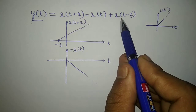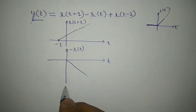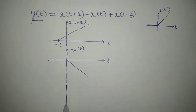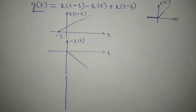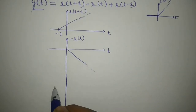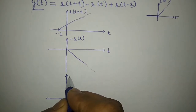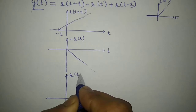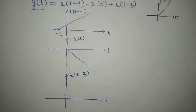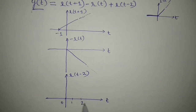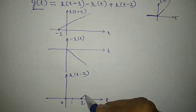Now I need to sketch r(t-2). Drawing the y-axis and x-axis, I call this signal r(t-2). It is a shifted version of the ramp but shifted to the right by 2, so the ramp signal starts from t equal to 2.